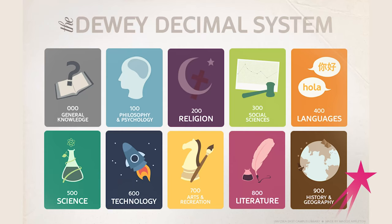One of the ways we organize a library is by using the Dewey Decimal System. Melville Dewey created the Dewey Decimal System in the 1870s, and he based this on a series of numbers.